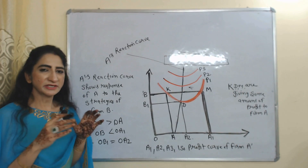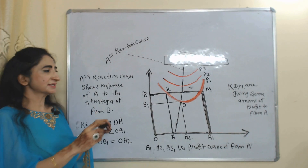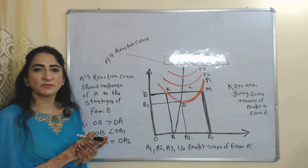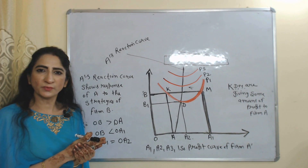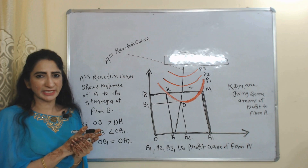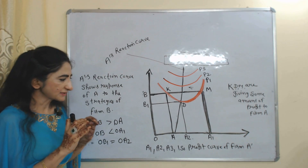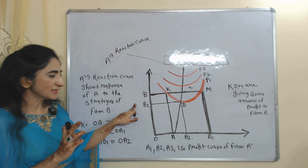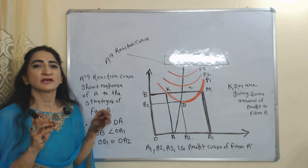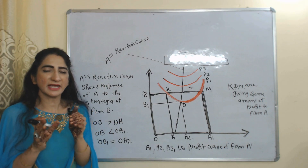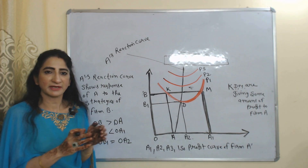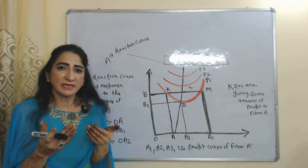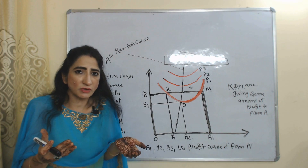There is no capacity constraint, meaning firms can produce enough to meet market demand, and there is no transaction cost. Now we understand this model with the help of a diagram. Here we assume we have only two firms, A and B. On the X-axis we have the price of A and on the Y-axis the price of B.